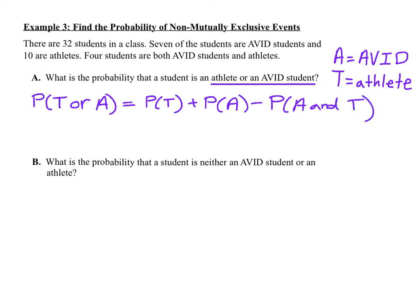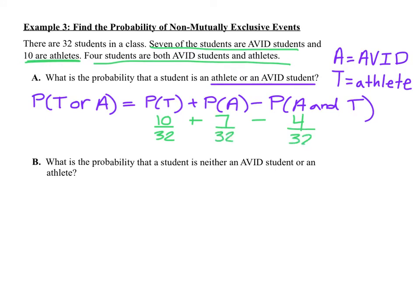Now let's find our totals. There are 10 athletes, 7 avid students, and the overlap is 4 students who are both. All of these are over 32, the total number of students in the class. So 10 plus 7 is 17, and 17 minus 4 is 13. The probability that a student is an avid student or an athlete is 13 out of 32.